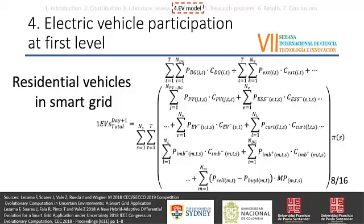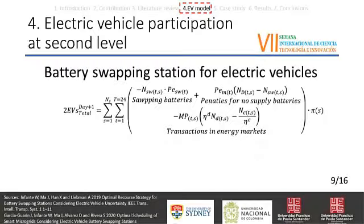This equation describes the first participation level. The Smart Microgrid includes stakeholders such as distributed generation, external supplier, photovoltaic generation, energy storage systems, electric vehicles, and negative and positive imbalance. The second participation level represents the battery swapping station in three terms: swapping batteries, penalties for not swapping batteries, and transactions in the energy market. The amount of energy transfer is limited by the capacity of the electric vehicle battery.